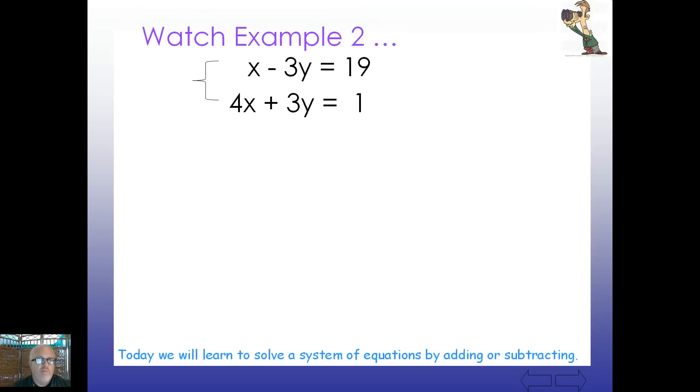Watch example 2. X minus 3Y equals 19 and 4X plus 3Y equals 1. So we put some coefficients here. Notice still the X's are over the X's. The Y's over the Y's. The equal signs line up. The constants line up. And what can we do here? How about we just add straight down?